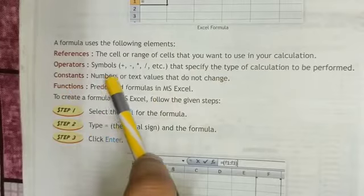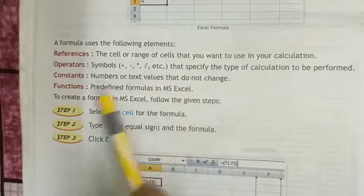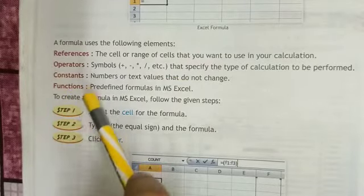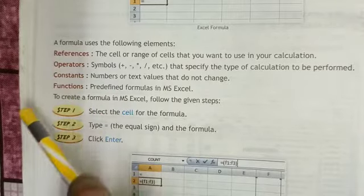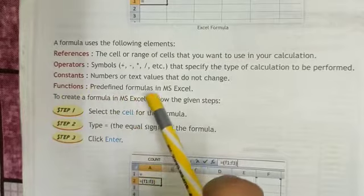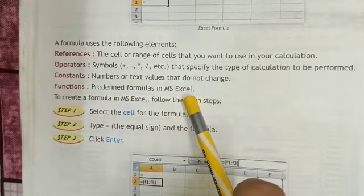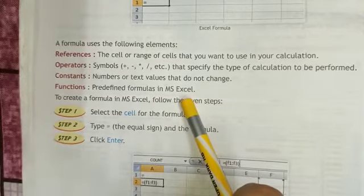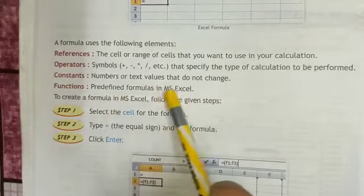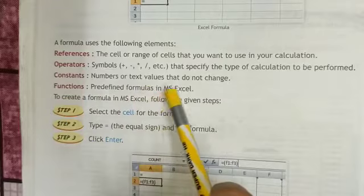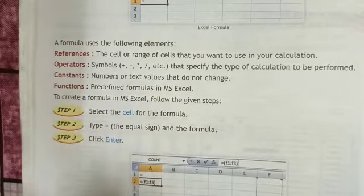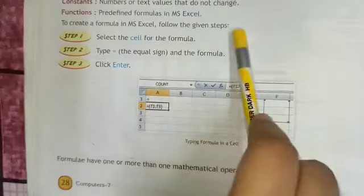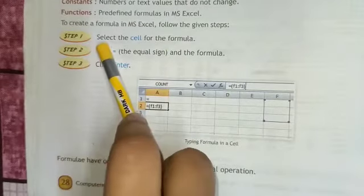Constants: number or text values that do not change. Functions: predefined formulas in MS Excel. We can create a formula in MS Excel by following these steps.